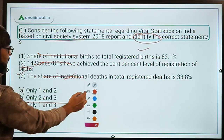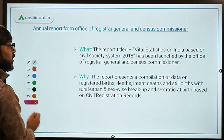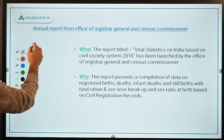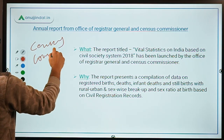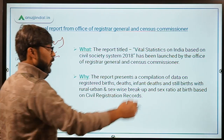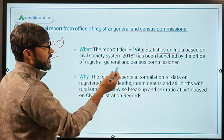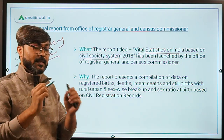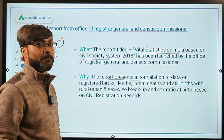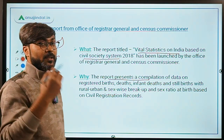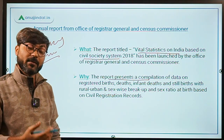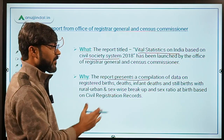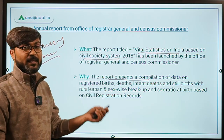Question number 3 is about a report from the Registrar General and Census Commissioner of India. The report titled 'Vital Statistics of India Based on Civil Registration System 2018' represents a compilation of data on registered births, registered deaths, infant registrations, and sex ratio based on birth registration.